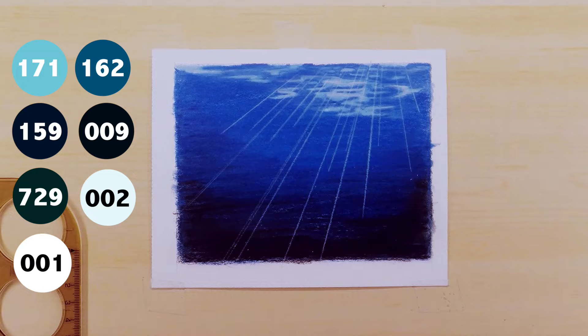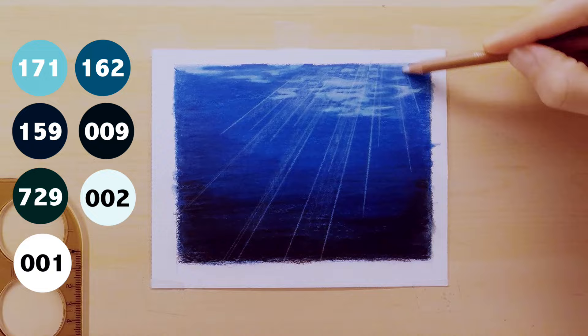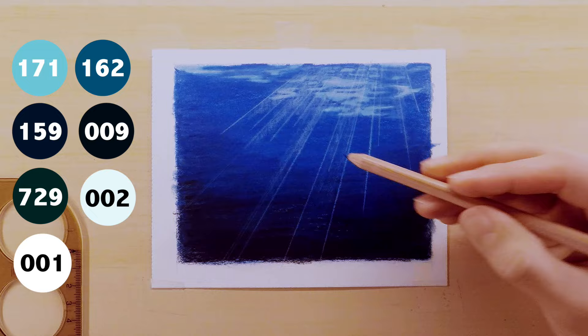Then I use my straight edge and the 001 pencil to create the light rays coming in through the water, and then I use the 001 just to boost the highlights near the top and down towards the bottom I use my 162 to kind of help fade the white lines away a little bit.